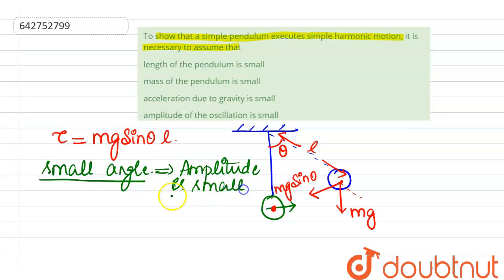We are going to assume that amplitude of the simple pendulum will be small and then we are going to derive the expression for the time period.